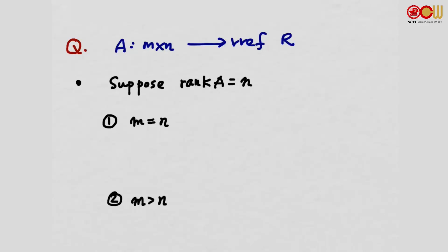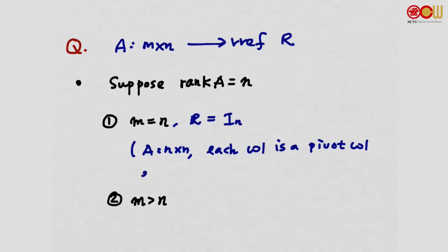First case: m = n. What does R look like when rank(A) = n? R has m non-zero rows, so every row is a non-zero row. R has m leading entries, and each column corresponding to a leading entry is a standard vector. So R is the identity matrix — since A is n by n and each column is a pivot column containing a leading entry.